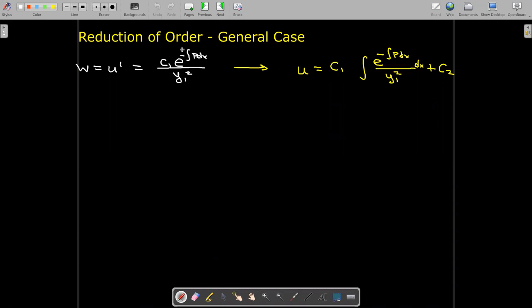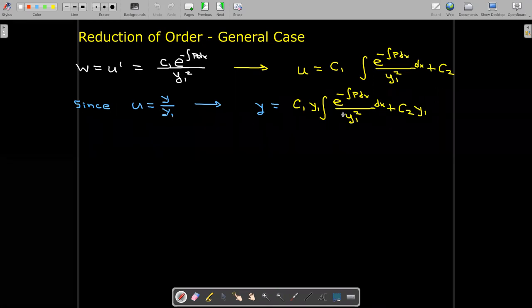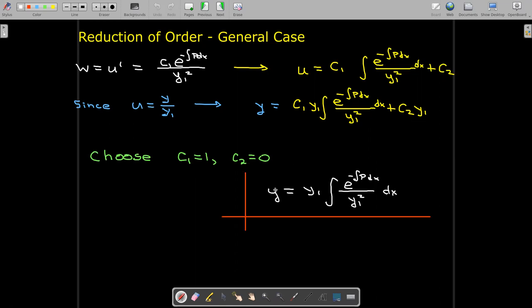To solve for u, we perform another integration of the quotient containing e raised to the negative integral of P dx, divided by y1 squared. Then we recover y by multiplying through by y1. Since I'm not looking for a general solution here but just a second solution, I choose c1 equals 1 and c2 equals 0, giving a clean formula for y2.